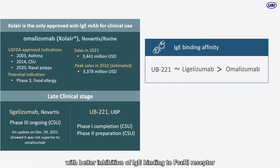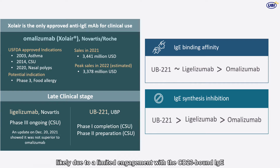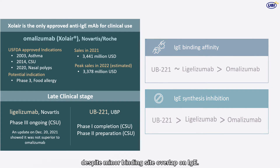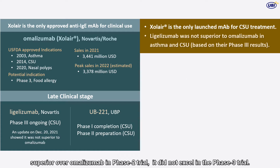with better inhibition of IgE binding to FC-Epsilon-R1 receptor and presumably higher reduction of IgE synthesis, likely due to limited engagement with CD-23-bound IgE, despite minor binding site overlap on IgE. However, while legilizumab showed anti-CSU efficacy superior over omalizumab in the Phase 2 trial, it did not excel in the Phase 3 trial.